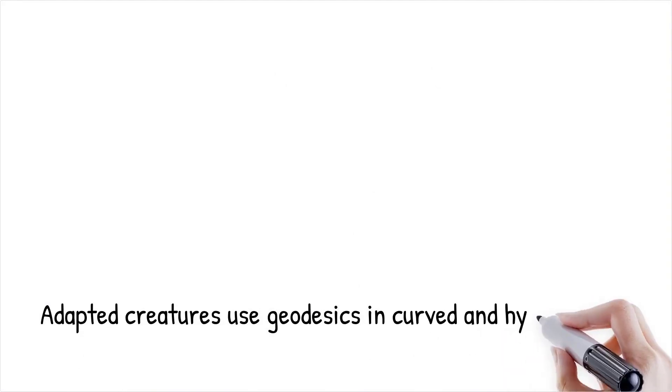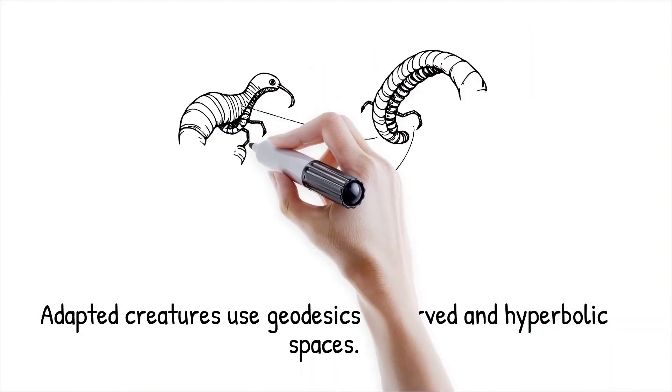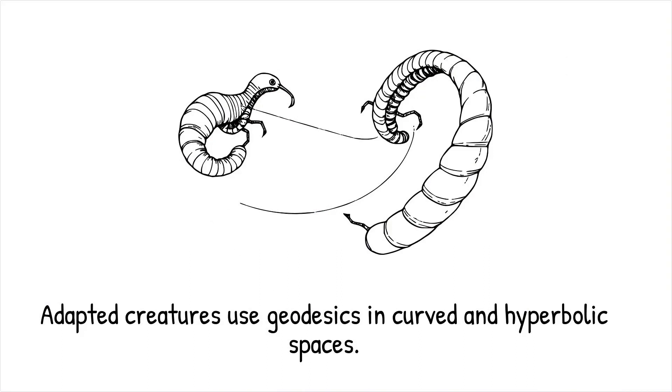Locomotion in curved or topologically unusual spaces requires adapting to geodesics, which represent the straight line paths in curved geometry. In hyperbolic spaces, creatures might evolve elongated or spiral forms to efficiently traverse expanding regions.